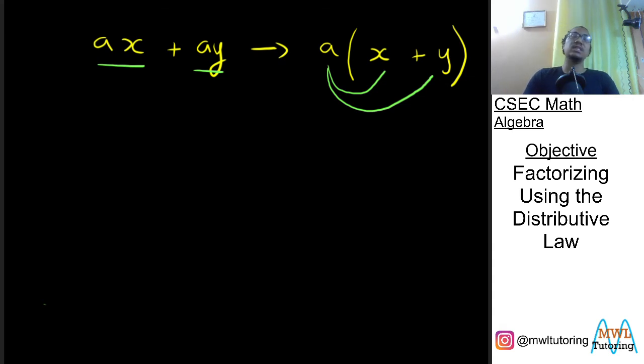Let's take a look at a more practical example. So this one here we have 2a minus 2b. And we want to factorize this.